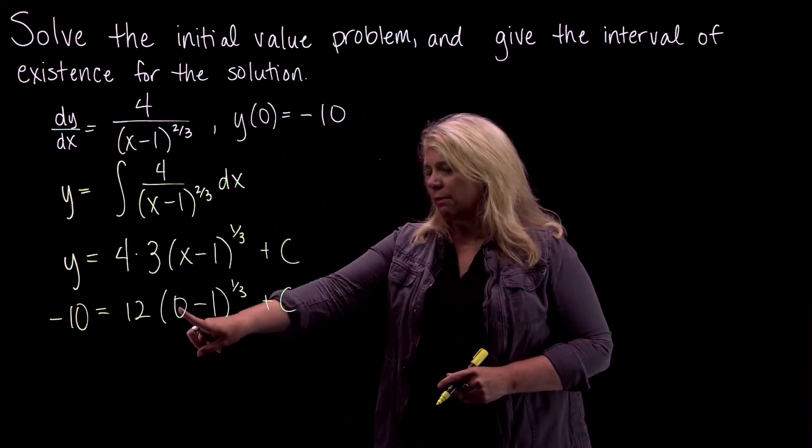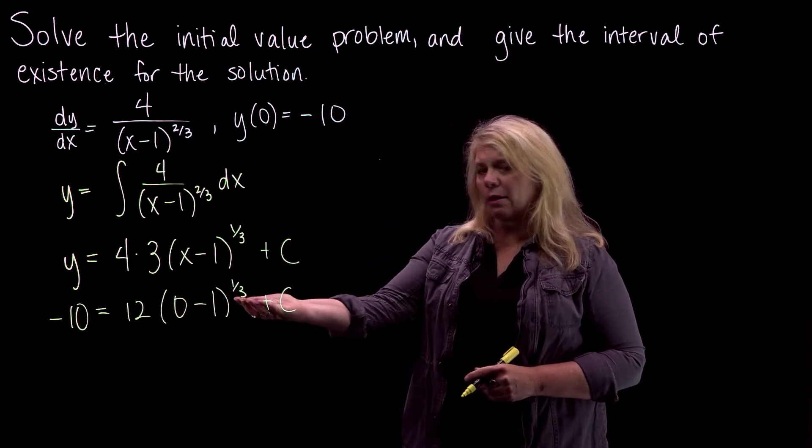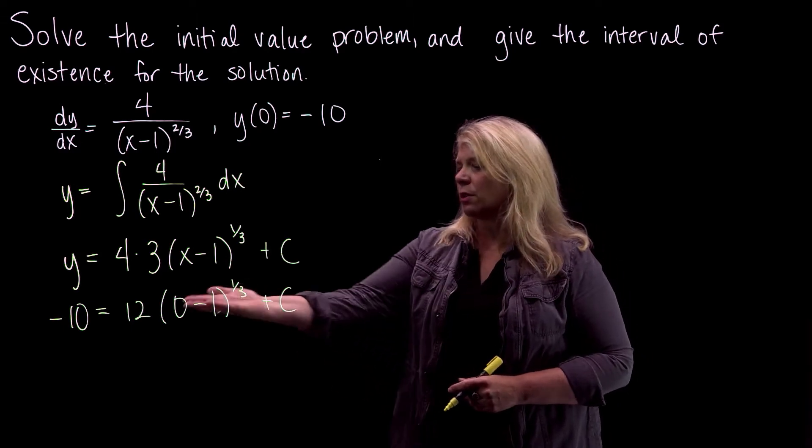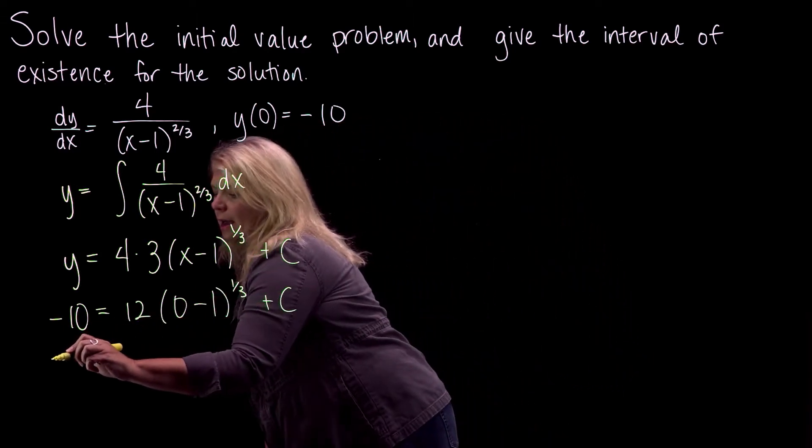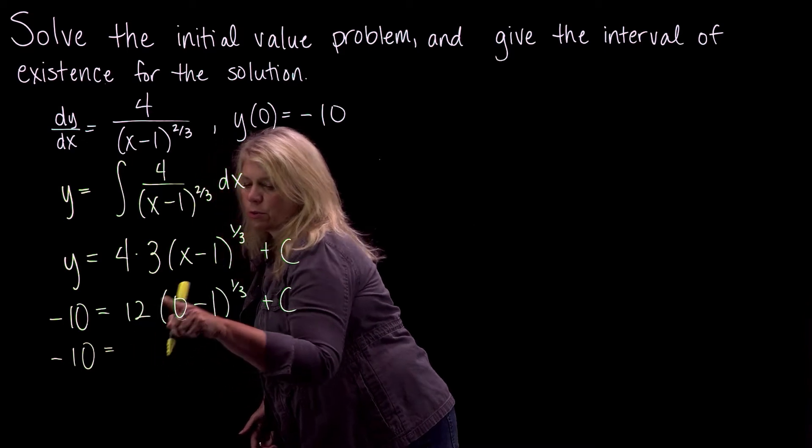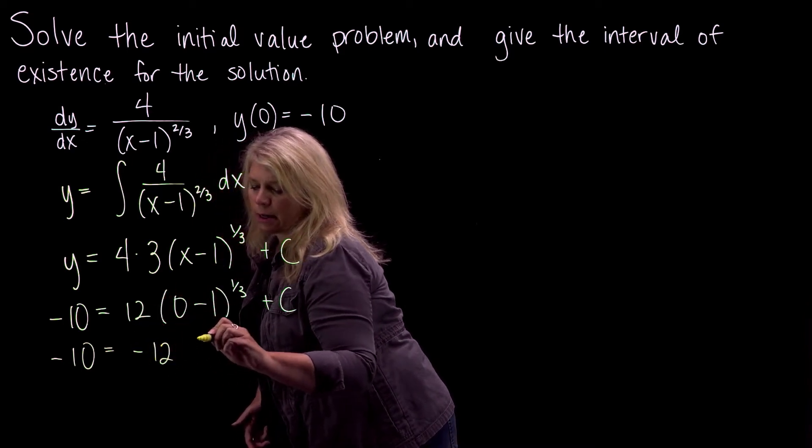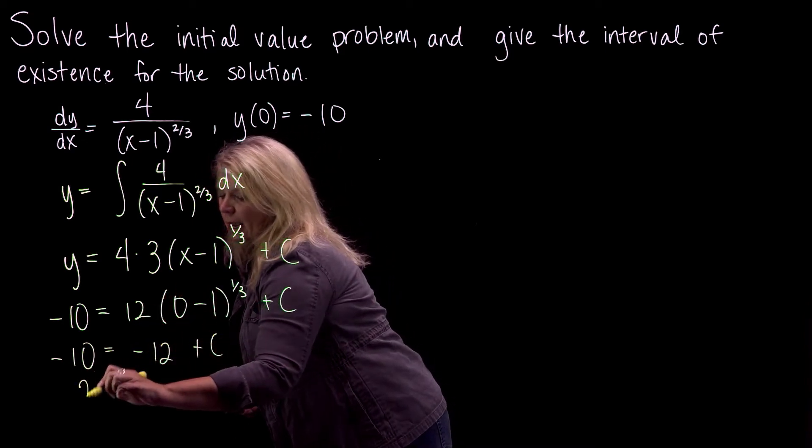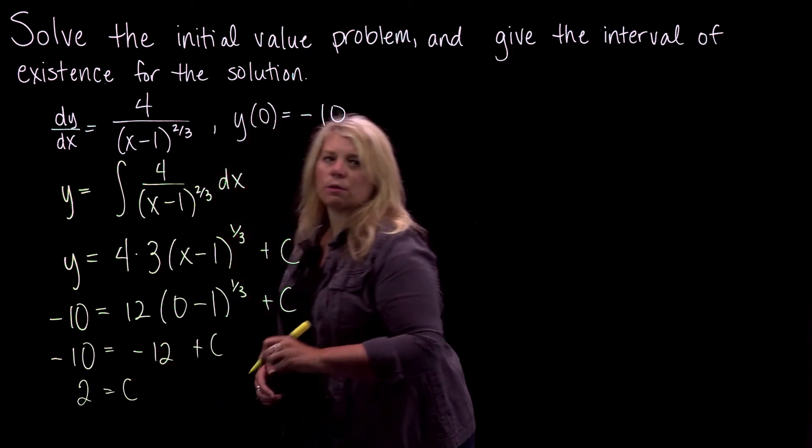Alright, so 0 minus 1 is -1. And then the 1/3 power is a cube root. So cube root of -1 is -1. So I have -10 equals 12 times -1, -12 plus C. And we'll get C equals 2.